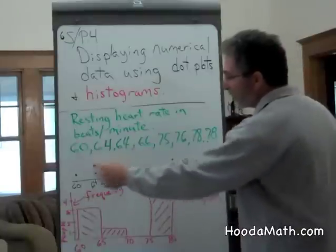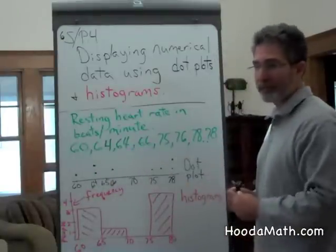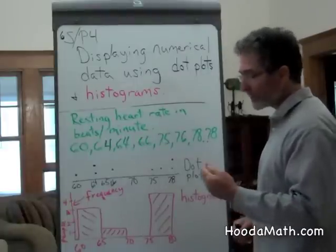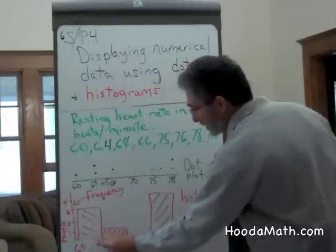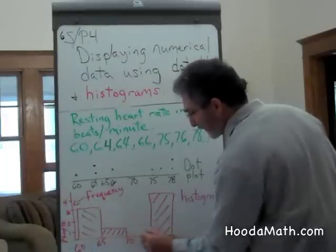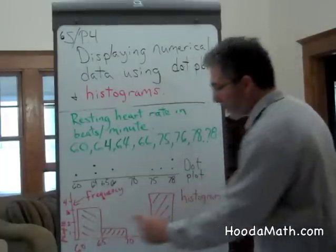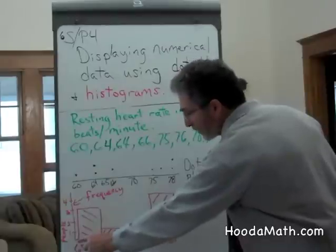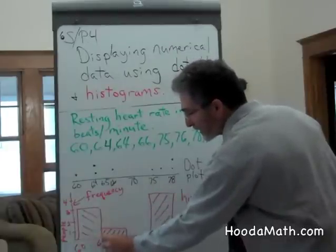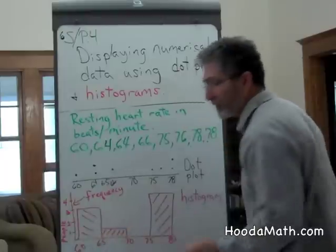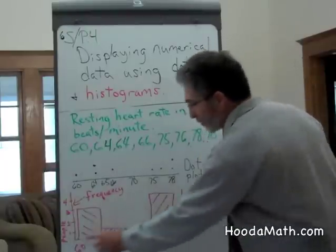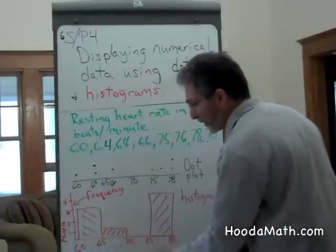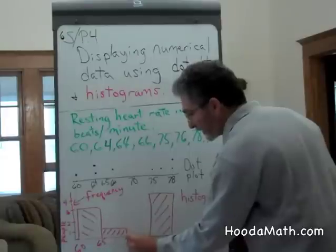Dot plots are normally used for a small amount of data. Histograms display data in a similar way, but they show an interval. Intervals are always the same width. In this particular case, we start with the number 60, and even though it says 65, this bin width is 4 units — it really refers to numbers between 60 and 64. This bin width is also 4, from 65 to 69.